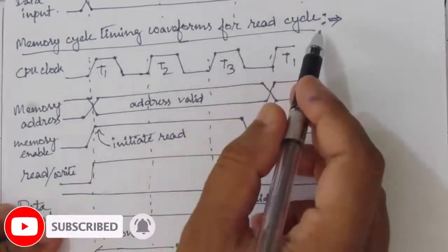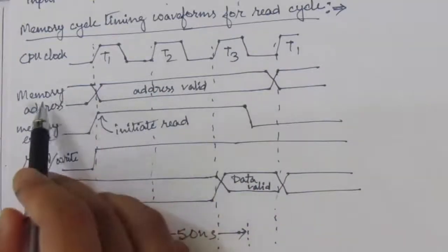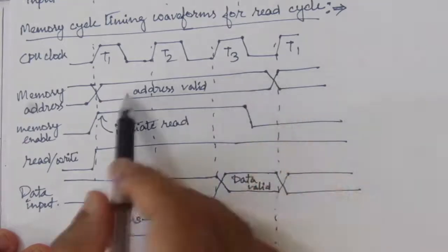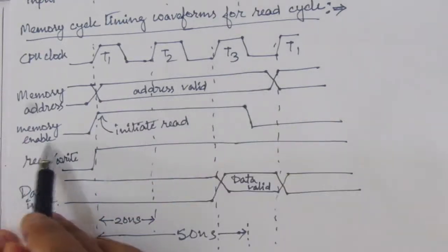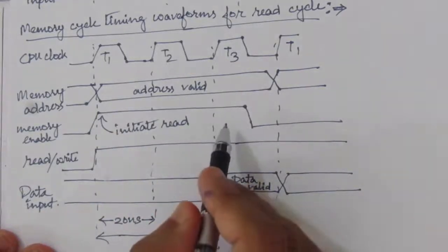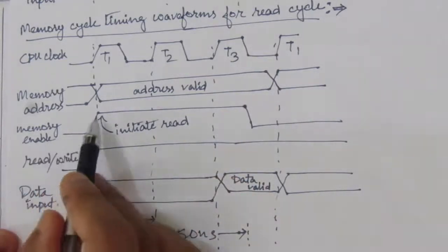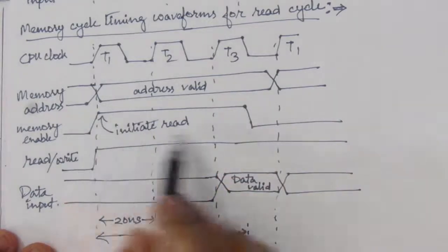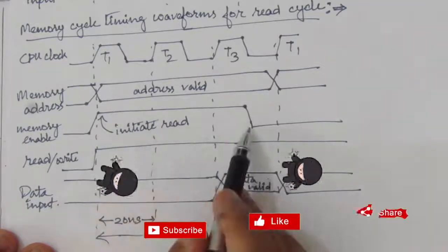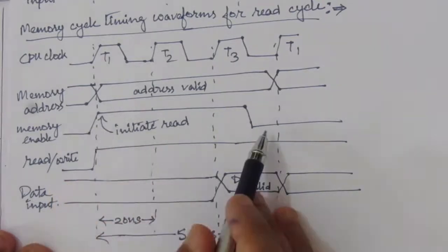Now we look at the memory cycle timing waveforms for the read cycle. The clock period remains 20 nanoseconds. The memory address is the same as before — valid for three clock cycles. Memory enable will be active for the 50 nanosecond duration, starting from the beginning of the cycle up to the midpoint of the third clock. Whenever we have a high value on the memory enable line, it starts initiating the read from memory.